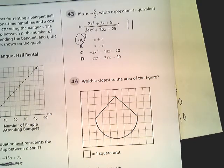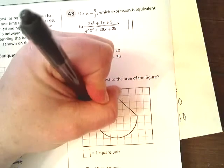This is the Tennessee practice test for number 44 for Algebra 1. In this question, I want to know what the closest area to the figure is. Well, if I make one simple move, this becomes very simple.